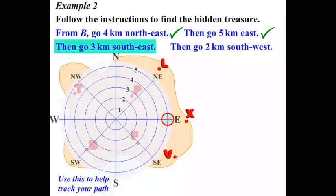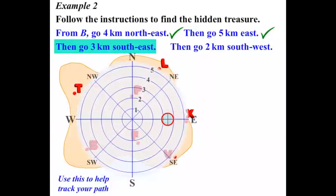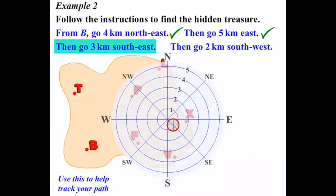The next step, we need to go 3km South East. So let's move the compass. And then 3km South East. There we go. Let's give that a tick.